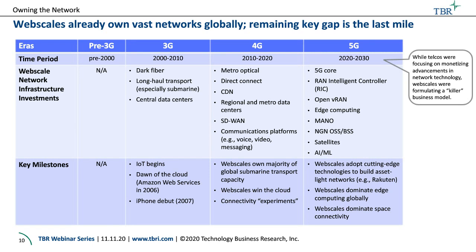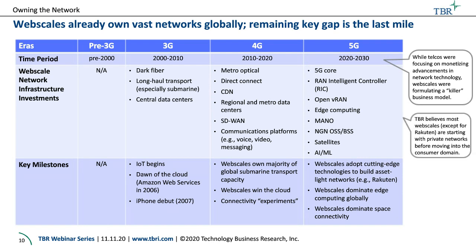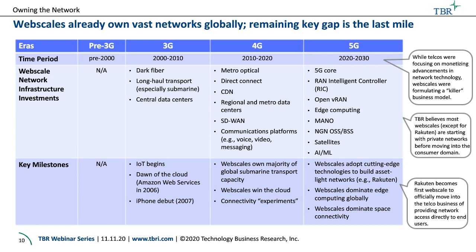While telcos are focused on monetizing advancement in network technology, web scales have been focusing on business models. That's what we're going to get into next — the business model and how that's going to move to free. Some web scales are starting with private networks — we see that now with Azure Edge Zones, Outposts, Anthos — starting in the private network space in the enterprise domain, and we expect they're going to jump into consumer at some point. Rakuten is going the opposite direction: they started in consumer and are now coming into enterprise. Rakuten was the first web scale to do this.